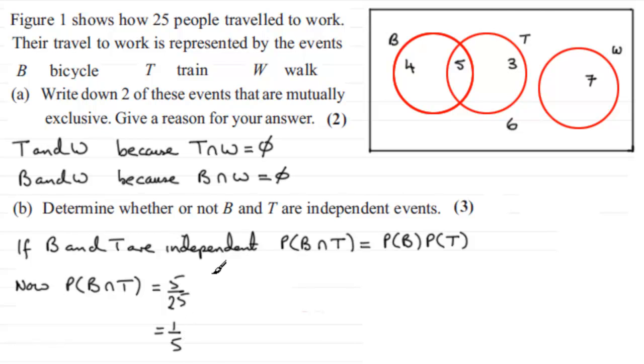Now we can work out, quite separately, what the probability of B times the probability of T is. So we've got the probability of B multiplied by the probability of T. Well, the probability of B, everything in here, those people that cycle to work, is a total of 9, and that's out of 25. So you've got 9 out of 25 for the probability of B. And we're multiplying that with the probability of T, those that travel to work by train. That's in this set here, a total of 8. So you've got 8 out of 25. And if you multiply these two together, what you get is 72 out of 625.